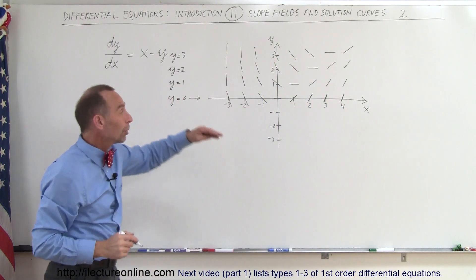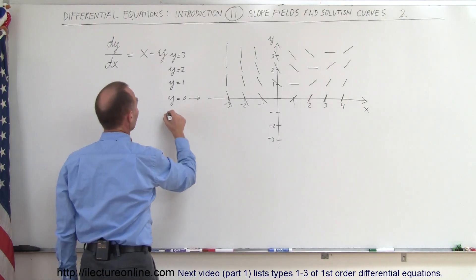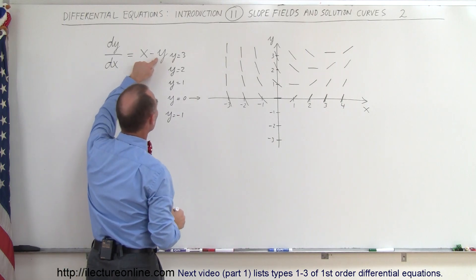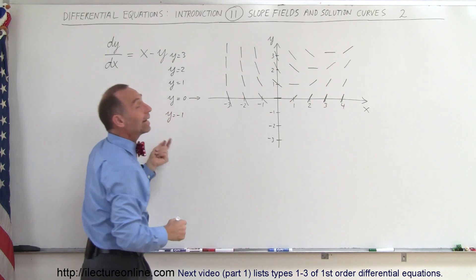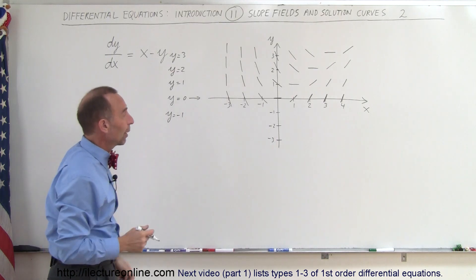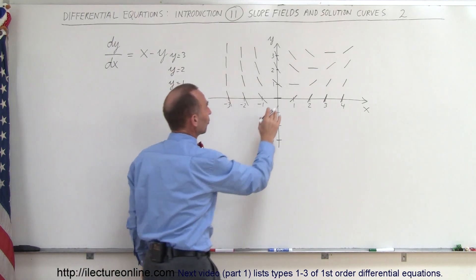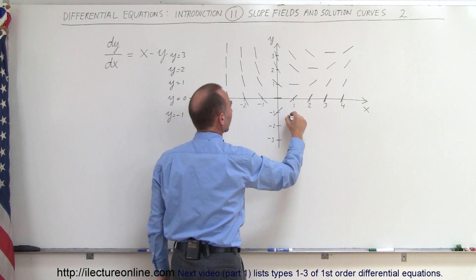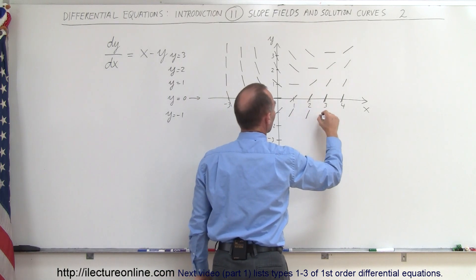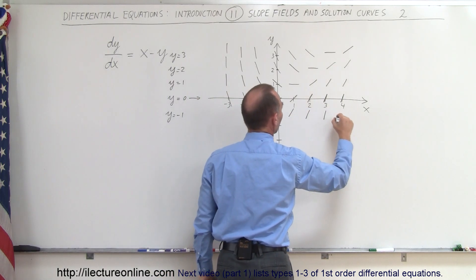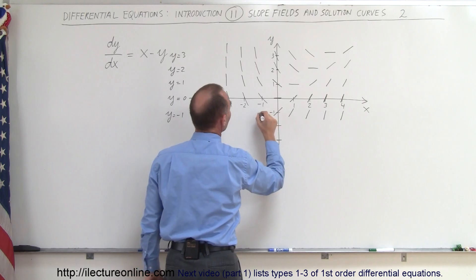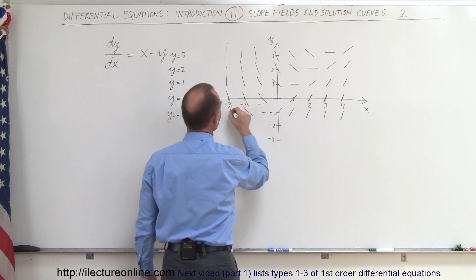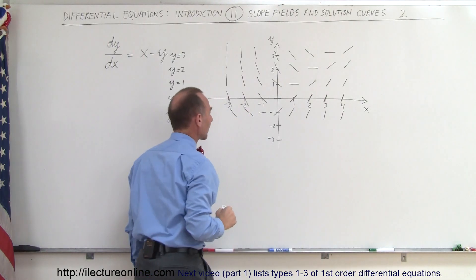Now let's go down below the x-axis to y equals negative 1. Since we're subtracting y, that's like adding 1, so the slope is increased by 1. The slope is 0 there, here it's increased by 1, here it's 2, 3, 4, 5. And here would be 0, here would be negative 1 and negative 2.